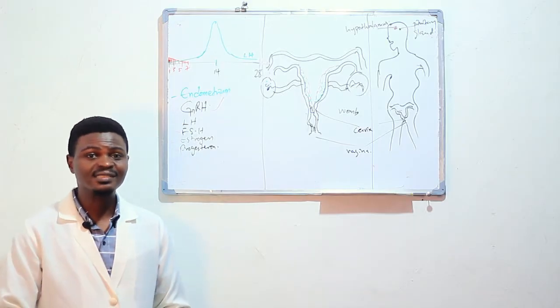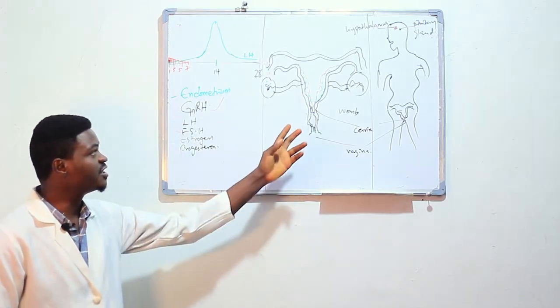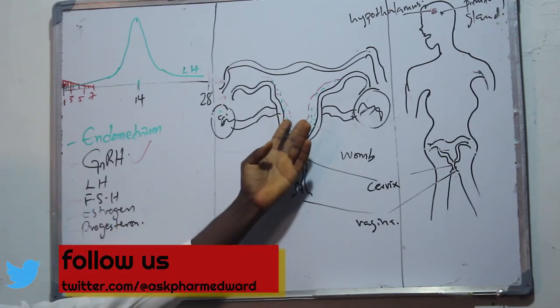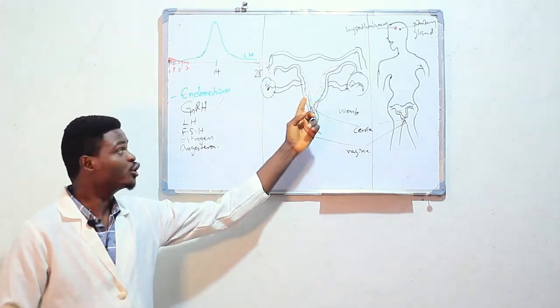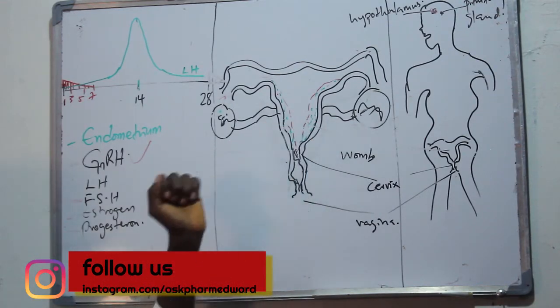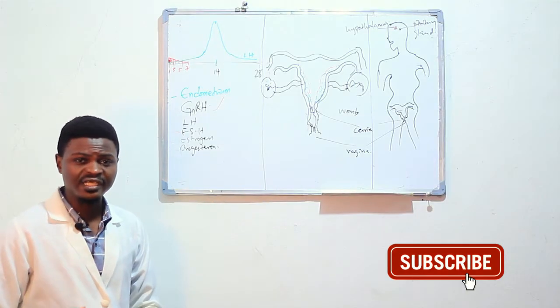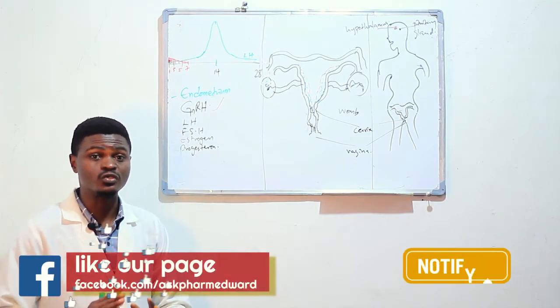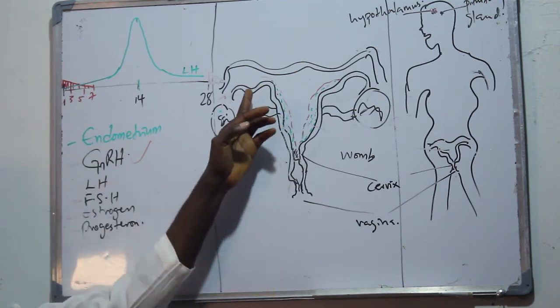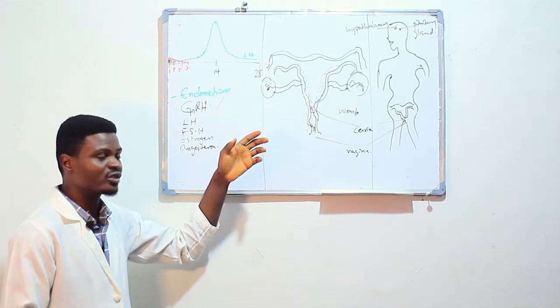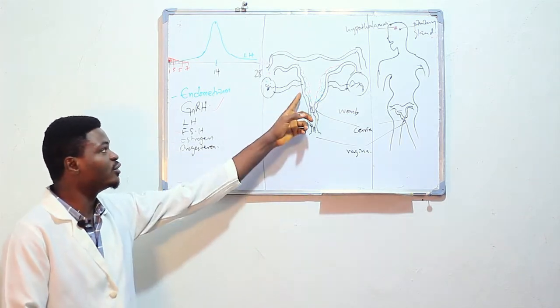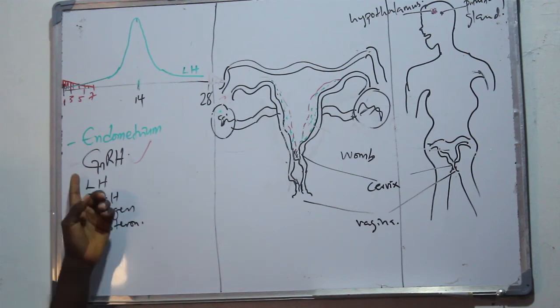The menstrual cycle begins with the shedding of the endometrium. Now the endometrium is the walls of the uterus, the womb. Before we dive right in, there are a few terms that we need to define. One of it is endometrium. The endometrium is the lining of the womb, just like your body has a skin covering it. For the womb, the endometrium is like the skin of the womb.